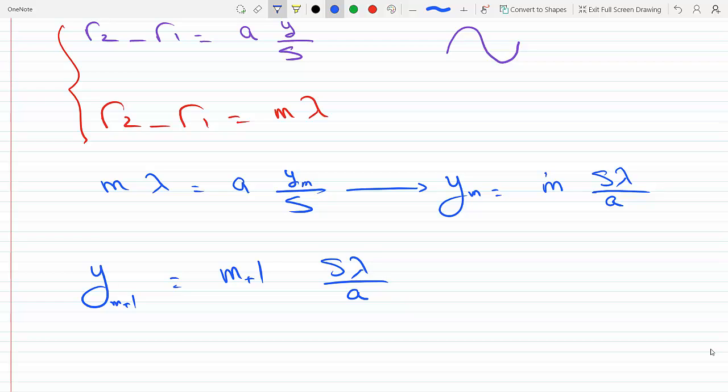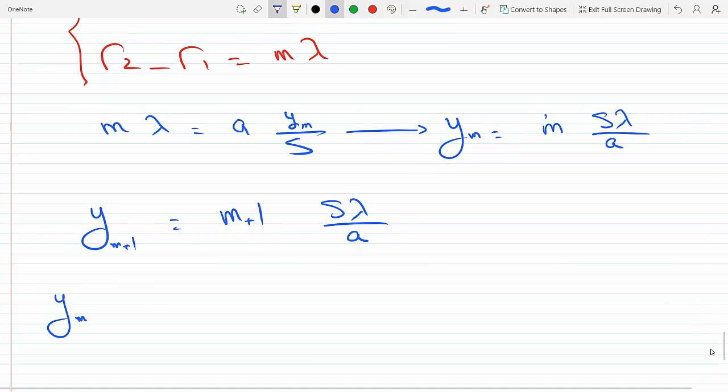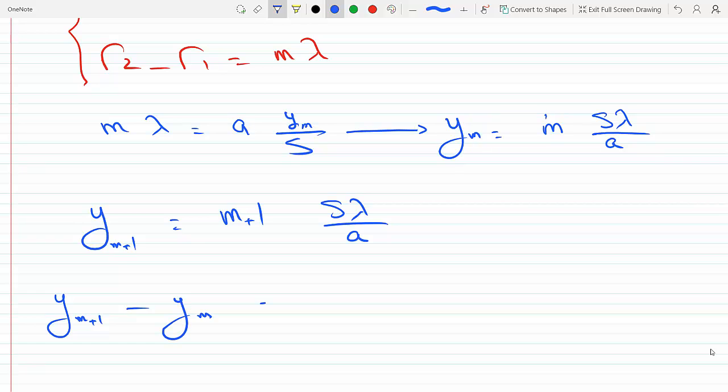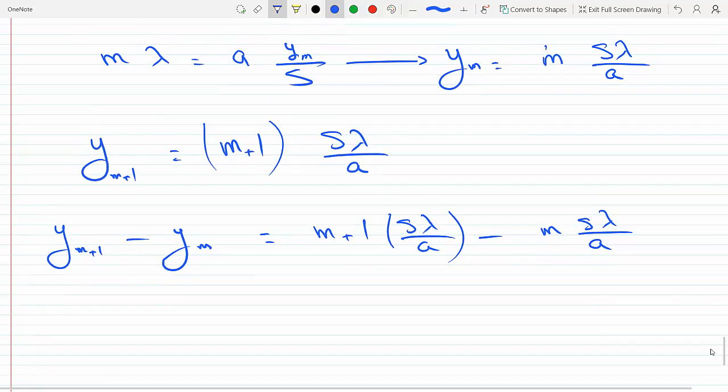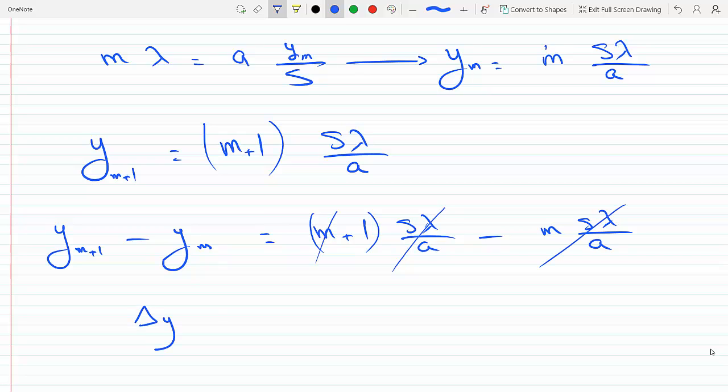So that's for one maximum. Now if I were to take the next maximum up, that would just be the next m. So y of m+1 will just equal (m+1) times s lambda over a. If I need to figure out the difference in positions of these two consecutive maxes, I can subtract: y_(m+1) minus y_m equals s lambda over a. If we foil this through and subtract, delta y, which in our question represents the fringe width that we can read from the graph, will equal s lambda over a.